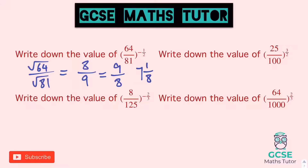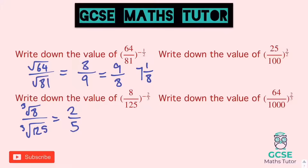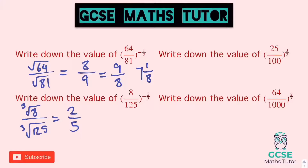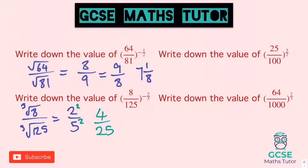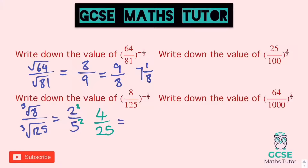Write down the value of 8 over 125 to the power of negative 2 thirds. 3 on the bottom, so we're going to cube root both. The cube root of 8 is 2 and the cube root of 125 is 5. Now the power on top is 2, so both get squared: 2 squared is 4 and 5 squared is 25. We just need to flip it over because of the negative power — so we get 25 over 4, which we could write as the mixed number 6 and 1 quarter.